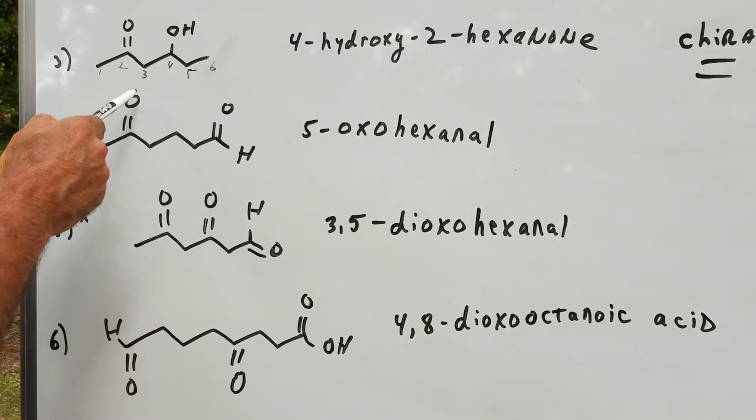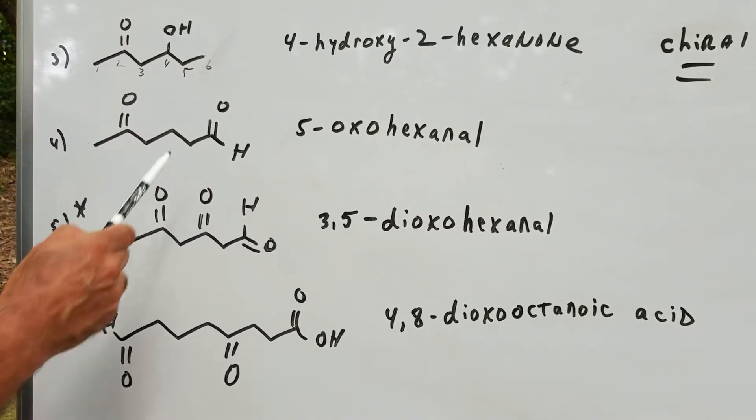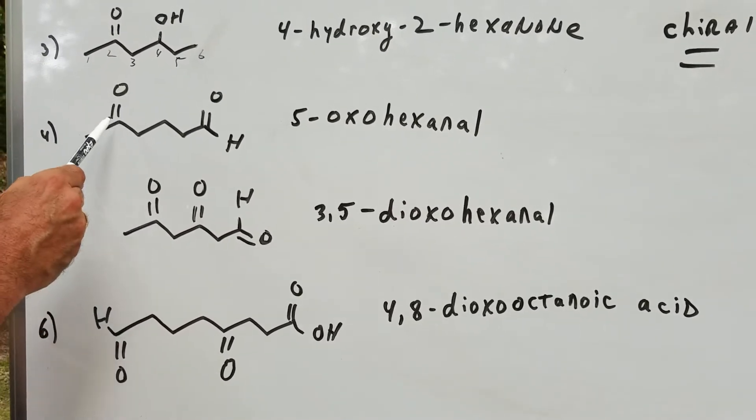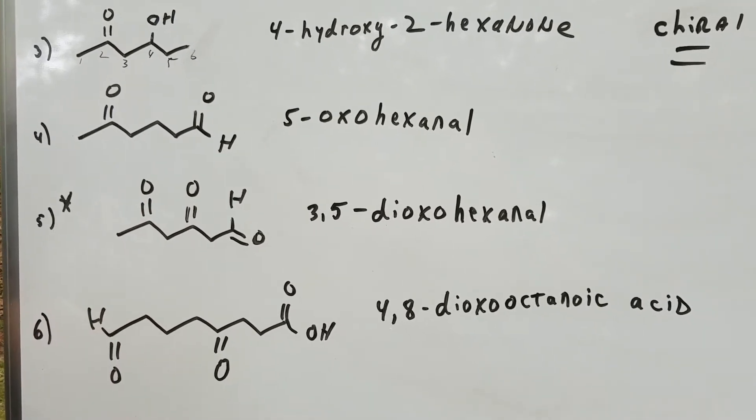Now you might say why is that? That's the IUPAC rule. Let the IUPAC boys fight that out. But the bottom line is the aldehyde takes the preference over a ketone. So if that's number one, that means the ketone group is a substituent, and therefore we use the word 'oxo.' Putting it all together, you can see you would get 5-oxohexanal.